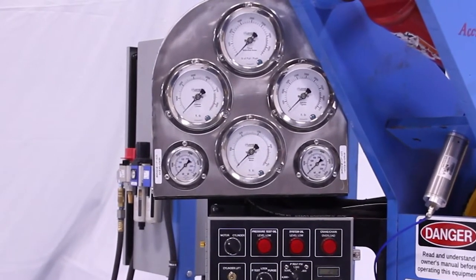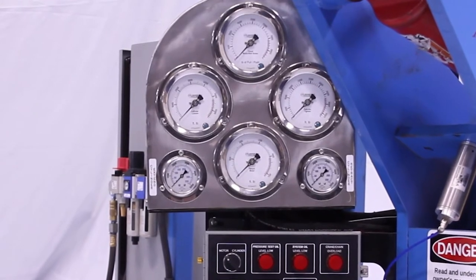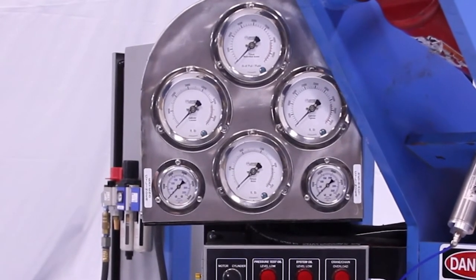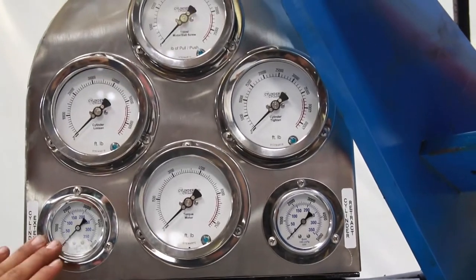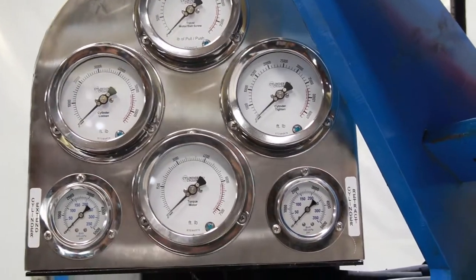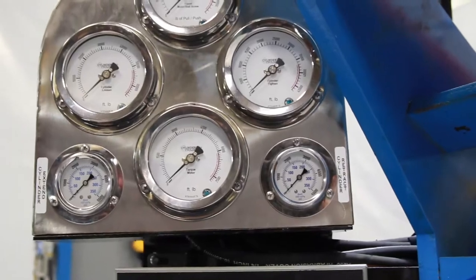These four big ones would give you the forward and reverse torque of the head and the open and closed travel of the head. These two gauges down here give you the PSI pressure testing numbers.